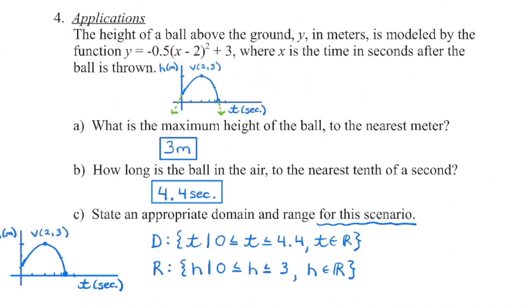For how long the ball is in the air: it starts at the launch point and lands when height is 0, so we look for the x-intercept using the calculator. Then we state appropriate domain and range for this scenario, not for all parabolas. On the x-axis, time begins at 0 and goes until the ball hits the ground at 4.4 seconds, so: 0 ≤ t ≤ 4.4. For the range, height goes from 0 on the ground to the maximum height of 3, so: 0 ≤ h ≤ 3. Always draw a sketch and identify what each axis represents — t for domain (time) and h for range (height).